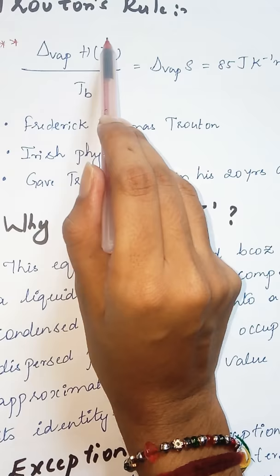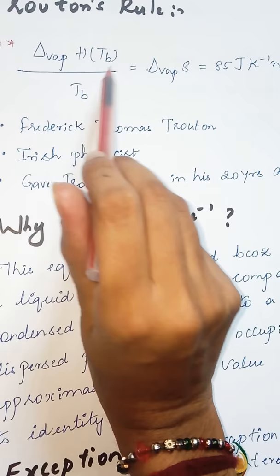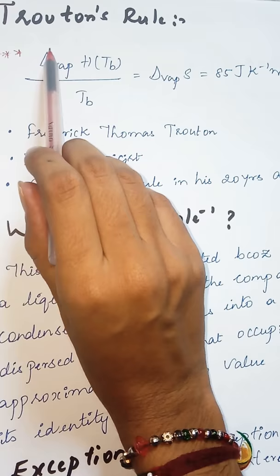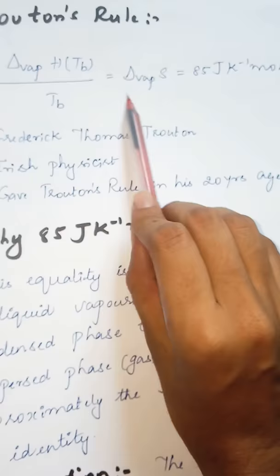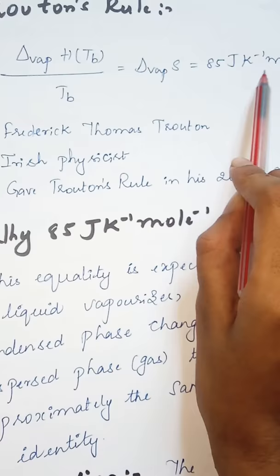It is just that the entropy of vaporization at its boiling temperature equals enthalpy of vaporization at that particular boiling temperature. Basically, Trouton's Rule assumes that the entropy of vaporization of any liquid is equal to 85 Joule K inverse mole inverse.